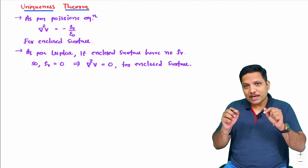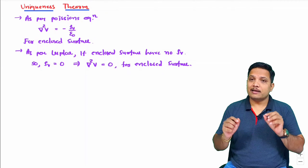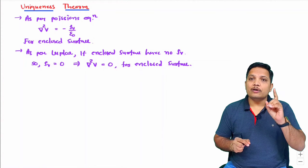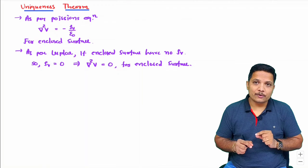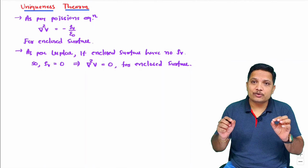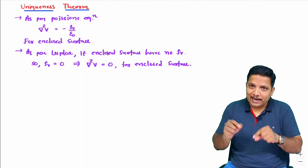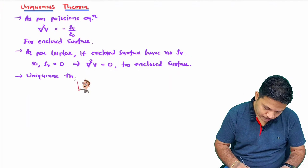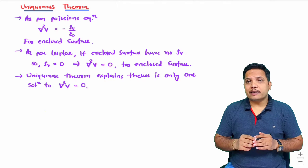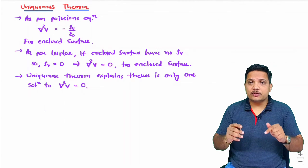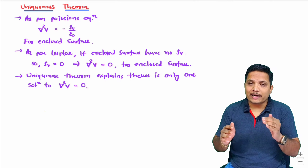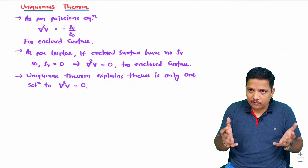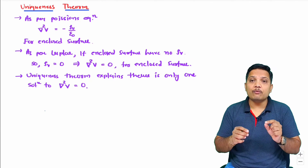The Laplacian equation states del squared V equals 0, provided the enclosed surface does not have any volume charge. Based on this, there is a uniqueness theorem that explains there is only one solution to del squared V equals 0 — there cannot be more than one solution. Now let us try to understand the physical understanding of this uniqueness theorem.